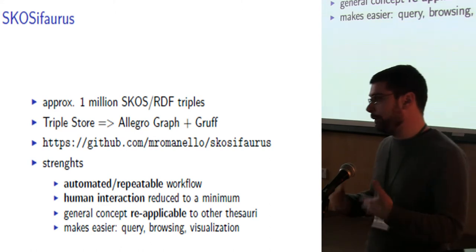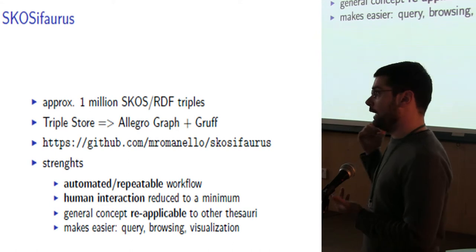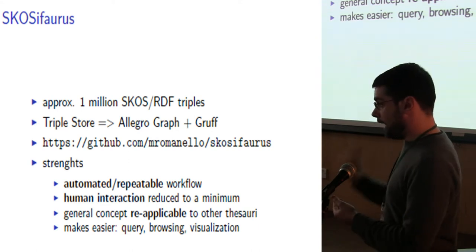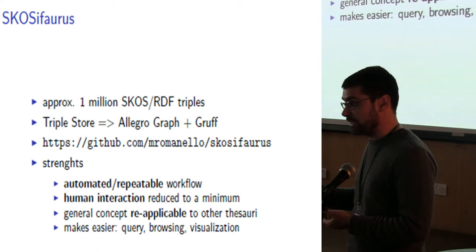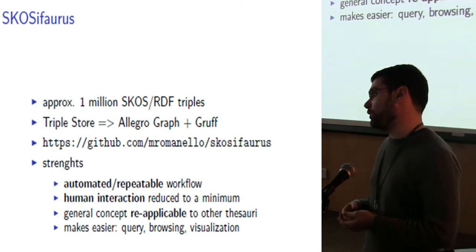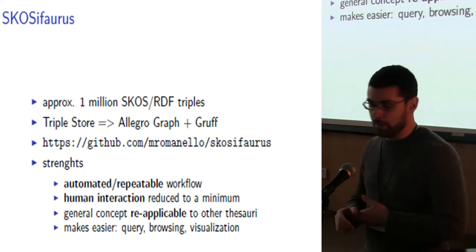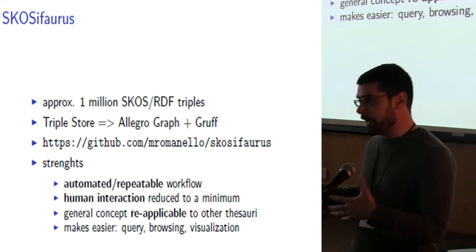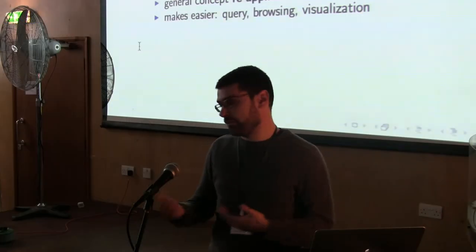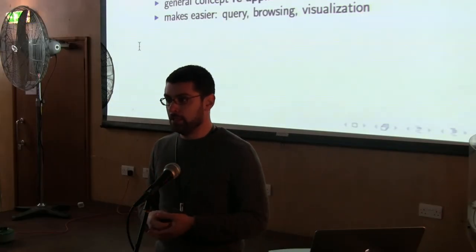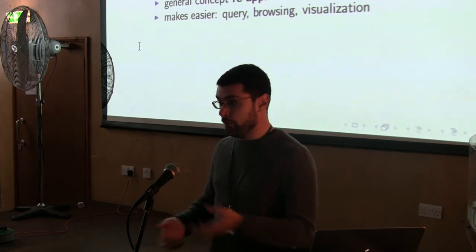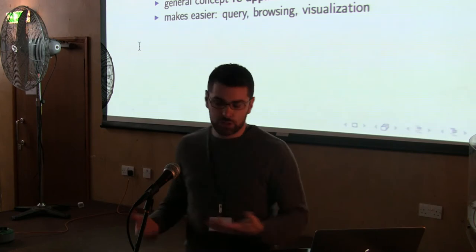This is needed, for instance, for our data because the library data is growing and changing periodically. So we want to be able to keep the thesaurus up to date by running this process regularly and periodically, and to reduce human interaction to a minimum. Going from fetching the data to transforming them can be reduced to a minimum using some APIs. The concept is general and can be reapplied to other thesauri — I really believe that there are many data out there in library catalogs that can be pulled out, transformed, and reused in more suitable forms.